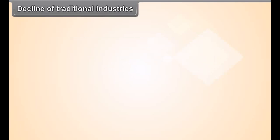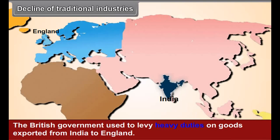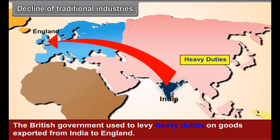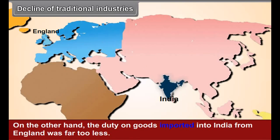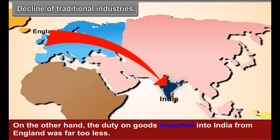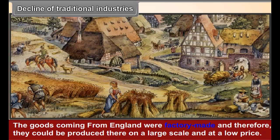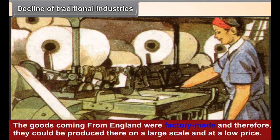Decline of Traditional Industries. The British government used to levy heavy duties on goods exported from India to England. On the other hand, the duty on goods imported into India from England was far too less. The goods coming from England were factory-made and therefore, they could be produced there on a large scale and at a low price.